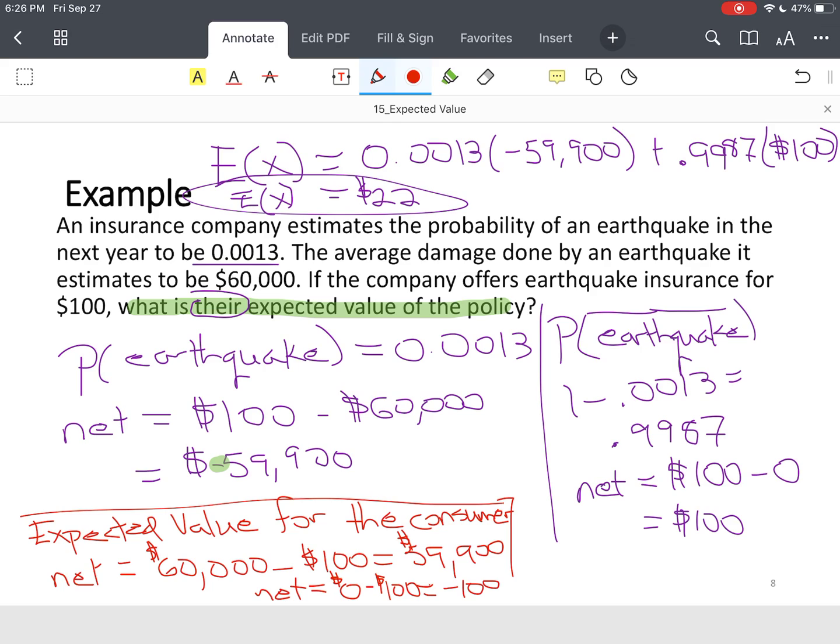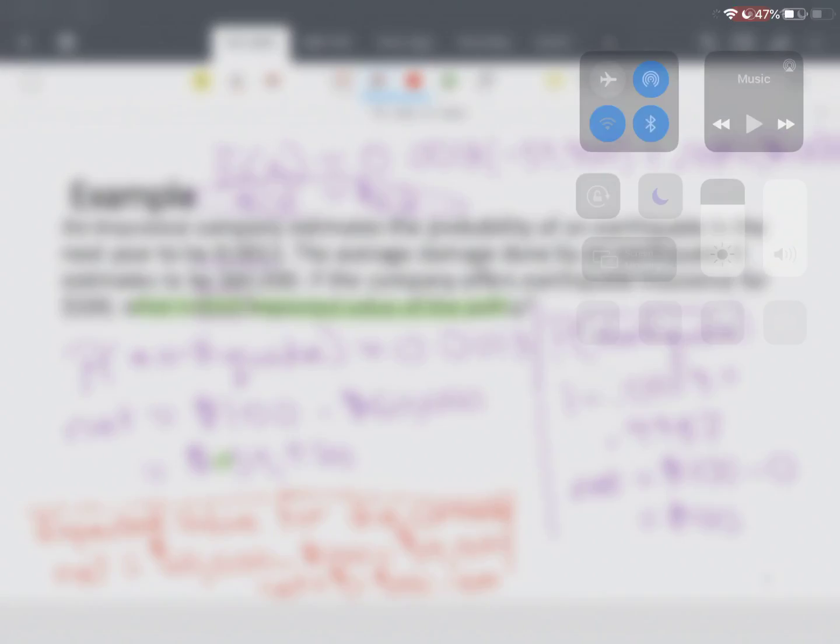Now, the question may be, why would I do that? And the reason being is because of the laws. Most consumers don't have $60,000 of cash sitting around waiting on an earthquake. So, yeah, you're out $22 a year, but potentially, if there's an earthquake, the insurance company will kick in the $60,000 that you need or the $59,900 that you need if you pay your premiums. I hope this helps.